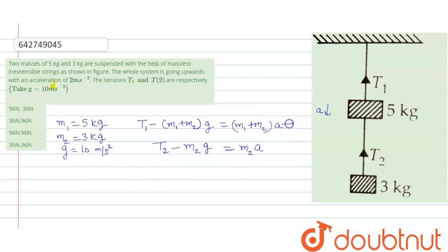Solve first equation then second equation. After solving first equation, T1 becomes... T2 becomes 5 plus 3 into 2, that is 5 plus 3 into 12.